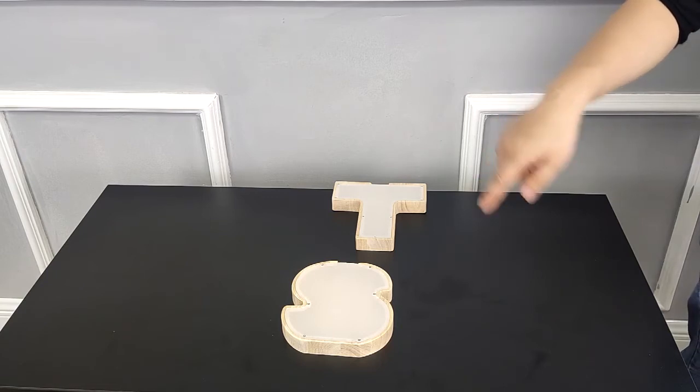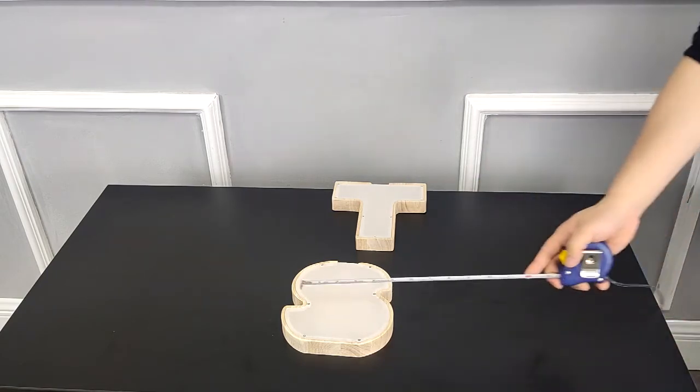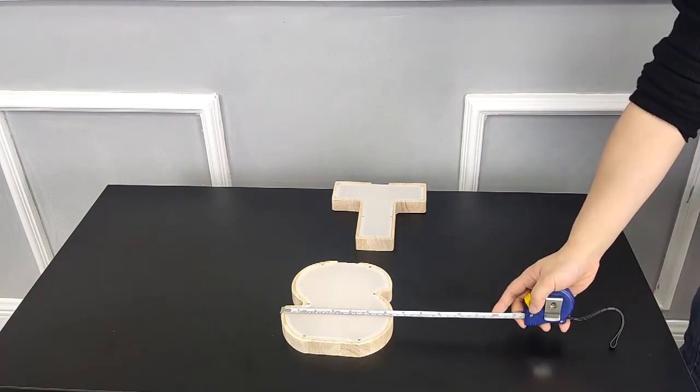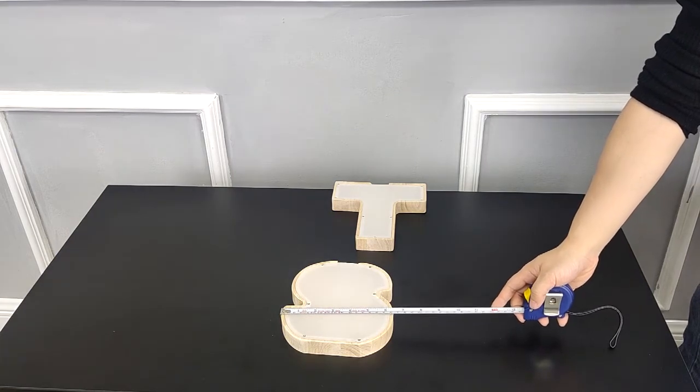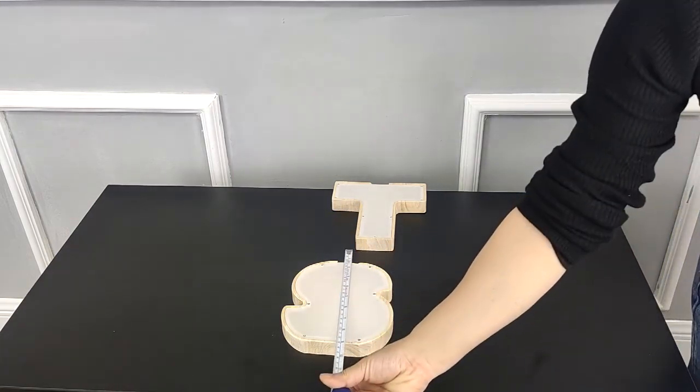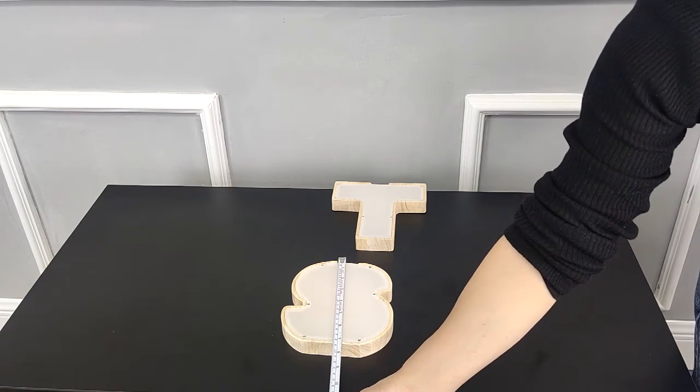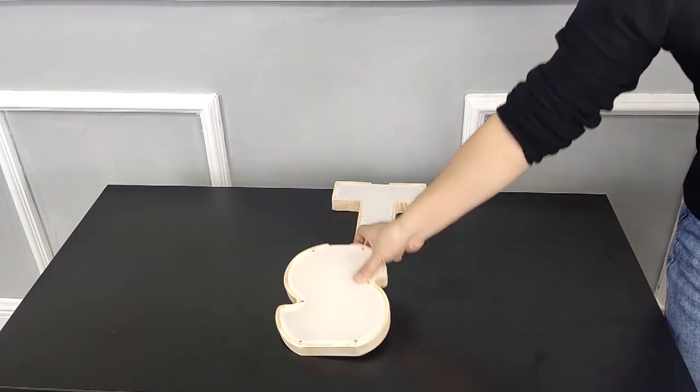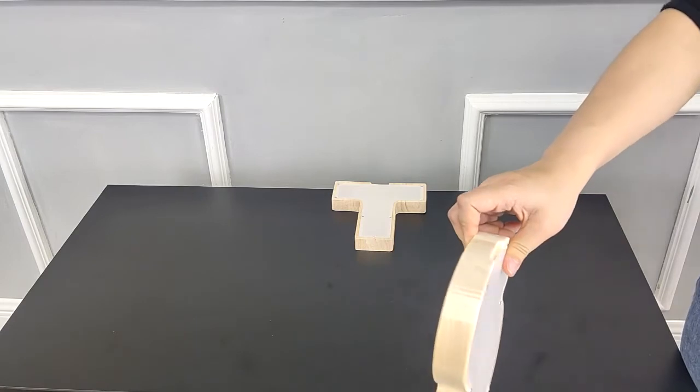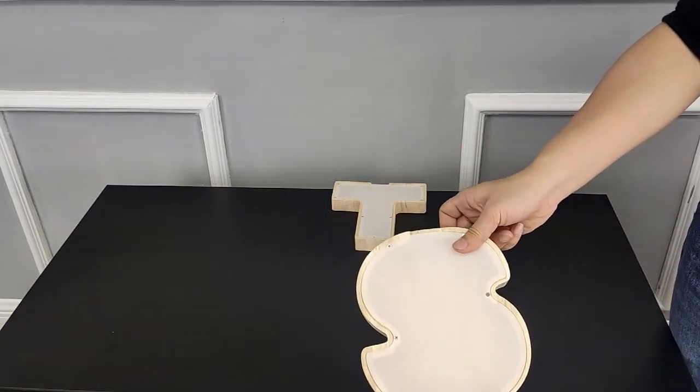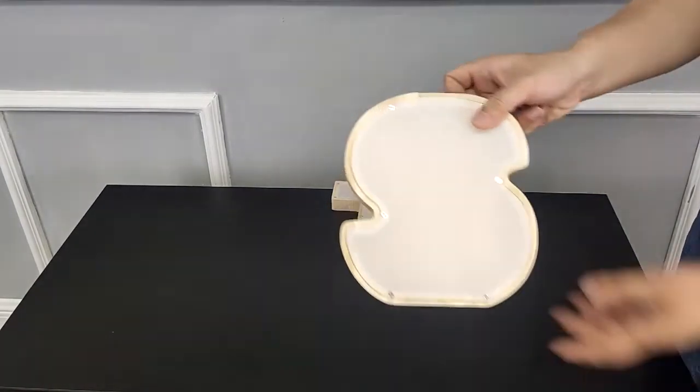Next we have letter S. Letter S measures 6.3 inches wide, 7 inches tall, 1 inch thick, and weighs about 0.7 pounds. The drop slot is 1.5 by one-eighth of an inch.